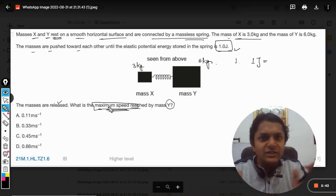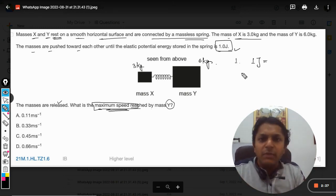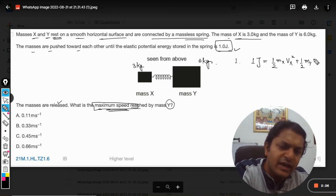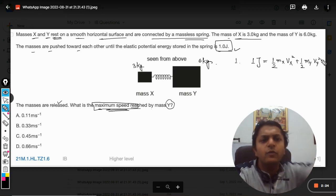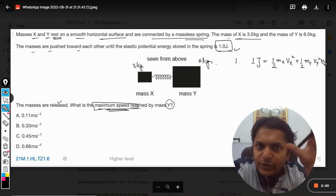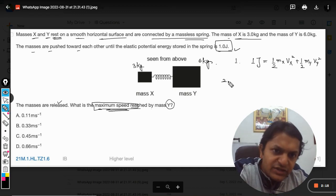It means there is no compression in the spring anymore. So the only energy is with the masses and that is kinetic energy. So I can say it will be half into mass of X into velocity of X squared plus half mass of Y into velocity of Y squared. This total kinetic energy equals total potential energy. This is the first equation we have created.